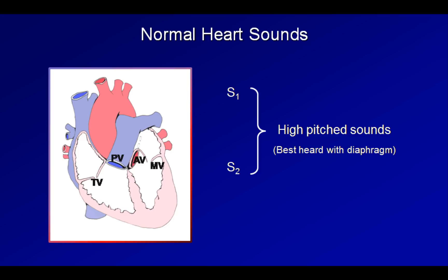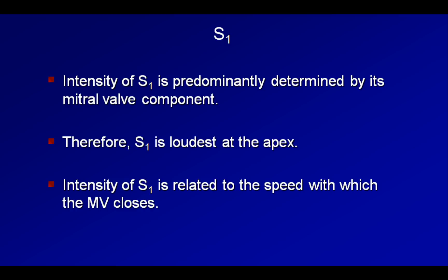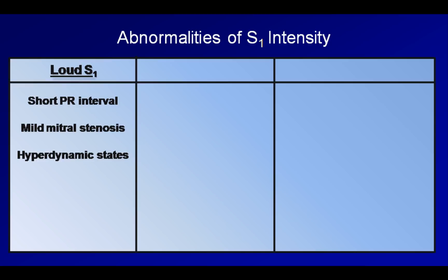The intensity of S1 is predominantly determined by its mitral valve component. Therefore, it is loudest at the apex, just over the mitral valve. The intensity of S1 is related to the speed with which the valve closes, which is largely determined by the strength of the left ventricular contraction at the moment of closure. There are three basic classes of abnormalities of S1 intensity. First is an unusually loud S1, which can be caused by a short PR interval, mild mitral stenosis, and hyperdynamic states. The recognition that mild mitral stenosis can lead to a loud S1 is particularly important, as this finding is typically easier to detect than its associated soft diastolic rumbling murmur.